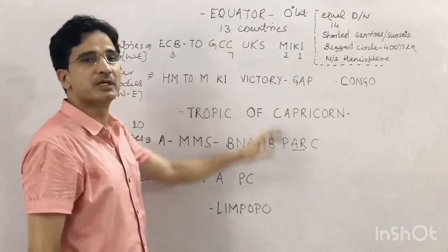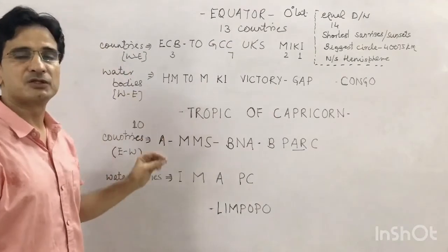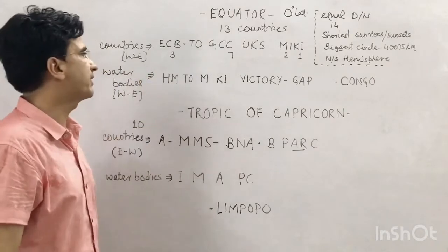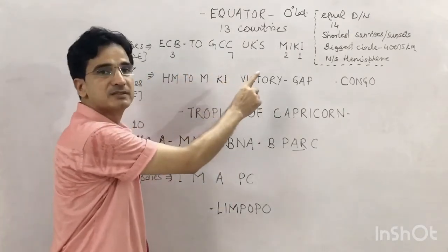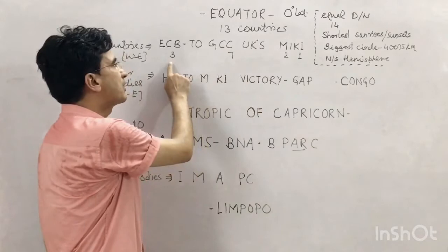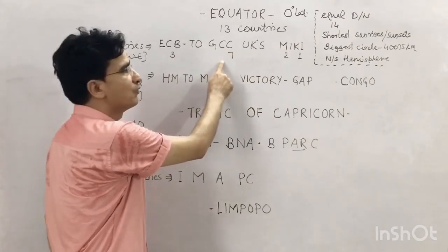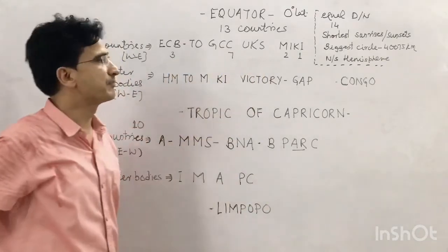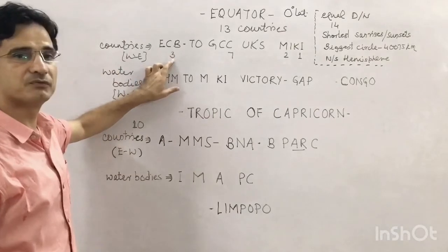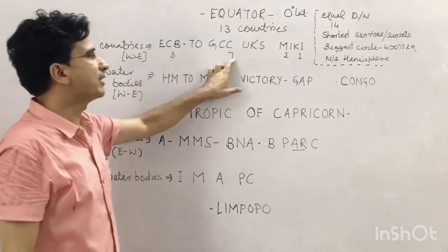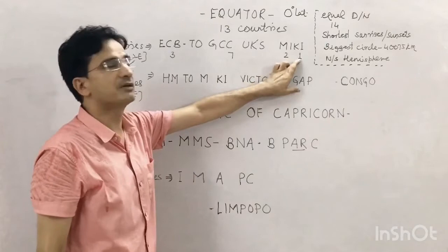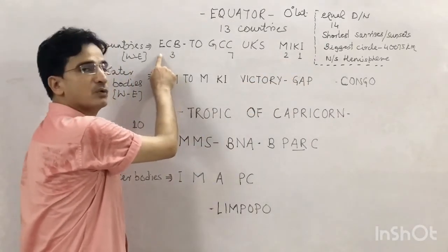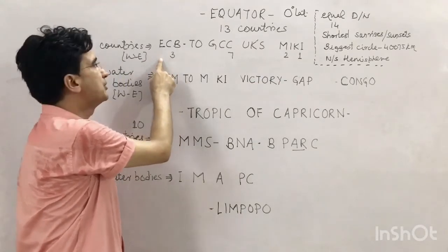The Equator passes through 13 countries. The trick, from west to east, is 'ECB to GCC UK's Mickey' — a player was transferred from ECB club to GCC club; UK's Mickey was transferred. It passes through three countries of South America, seven countries of Africa, two countries of Asia, and one country of Oceania. The South American countries start with Ecuador — the only country in the world named after a latitude.